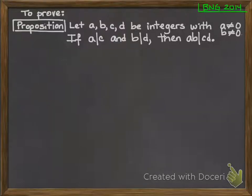Hi, I want to talk to you right now about how to prove statements regarding divisibility of integers. So I have an example here. This is a proposition that we're going to prove. The proposition is let a, b, c, and d be integers with a not equal to 0 and b not equal to 0. If a divides c and b divides d, then ab divides cd.